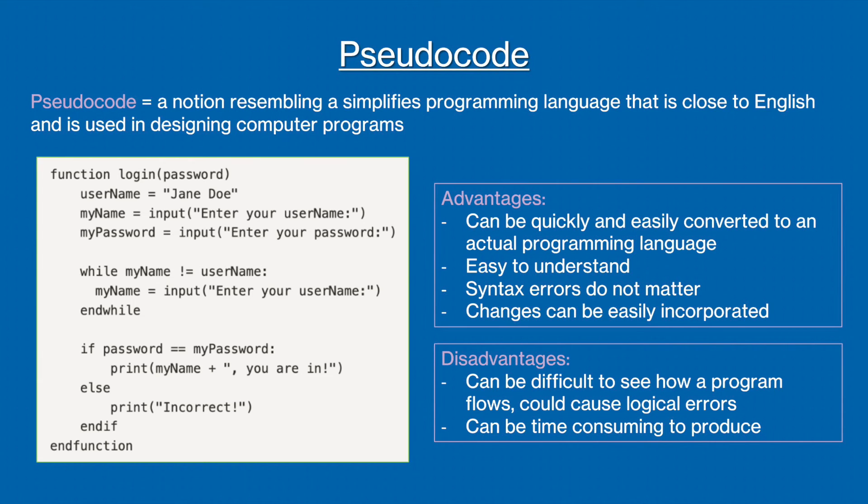We mentioned in the last slide that most algorithms contain inputs, outputs, and processes. Can you identify the inputs, outputs, and processes in this pseudocode? Pause the video here and have a go.